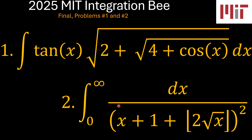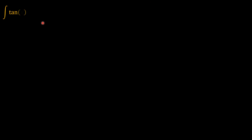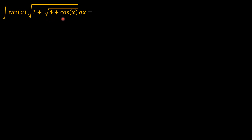Let's begin by looking at problem number one. As is my rule, I usually look for the more complex expression and try to substitute for it. Looking at this integrand, the more complex expression is the square root of 2 plus the square root of 4 plus cosine of x. So I let u be equal to that.